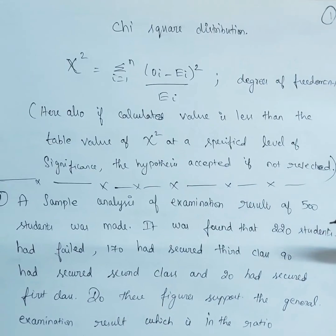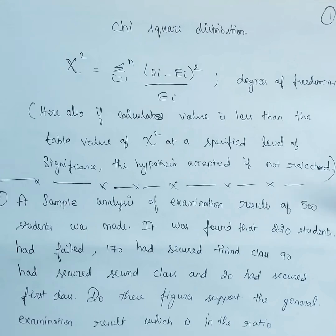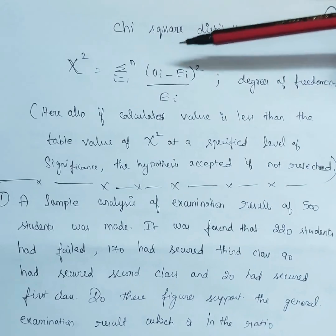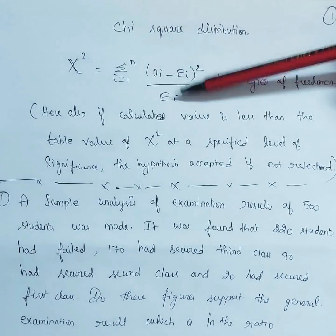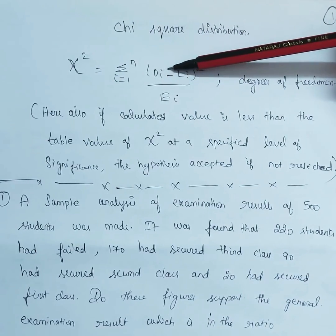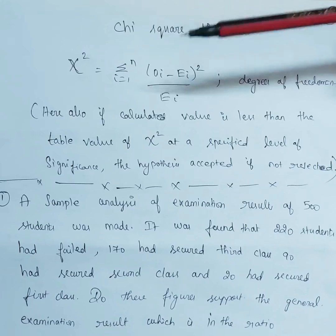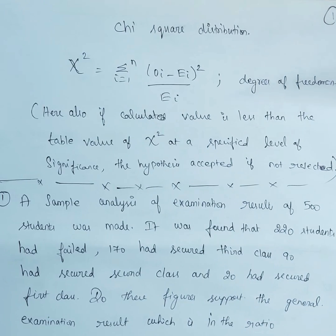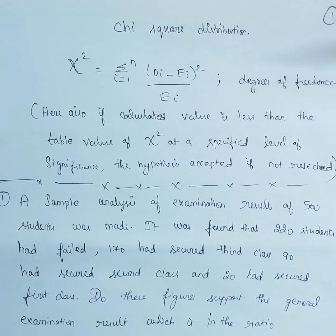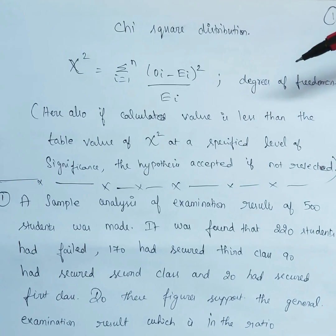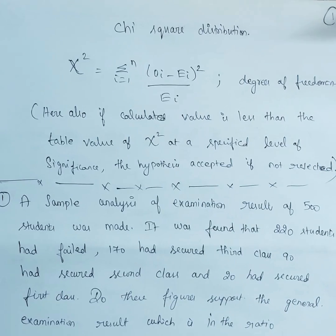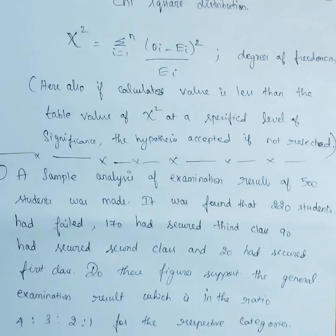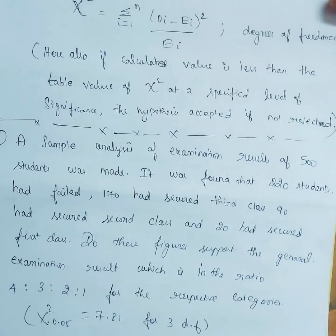Hello everyone, today we'll see problems based on chi-square distribution. The formula is chi-square equals summation from i=1 to n of (O_i minus E_i) squared divided by E_i, where O_i is the observed frequency and E_i is the expected frequency. The degrees of freedom is n minus 1. If the calculated value is less than the tabular value at a specified level of significance, we decide whether to reject the hypothesis or not.